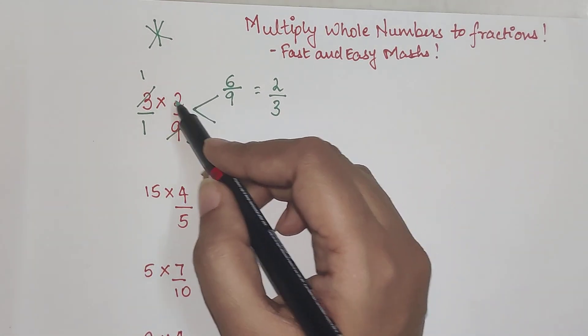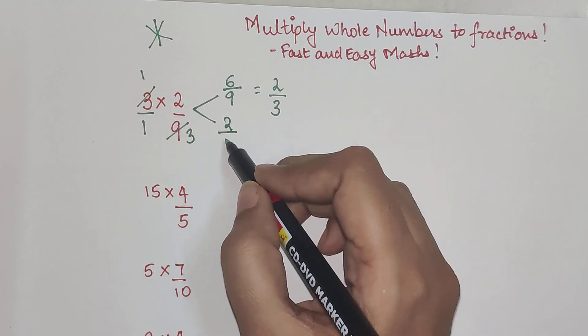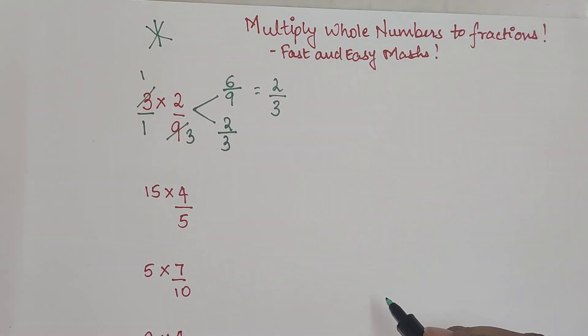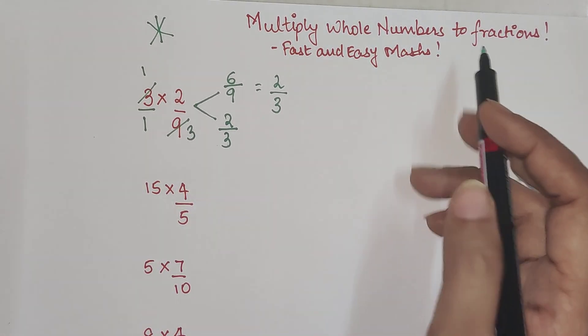Always remember you can go crisscross or you can go up and down. You can cancel them, meaning you can say that 3 has 9 in its table. So we can say 3 ones are 3 and 3 threes are 9. So your final answer will be 1 into 2 which is nothing but 2 and 1 into 3 which is nothing but 3.